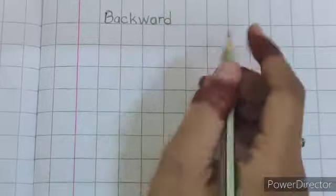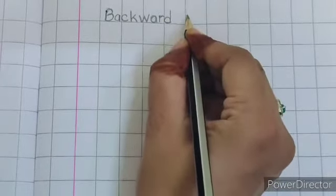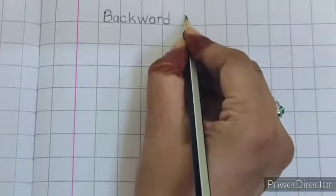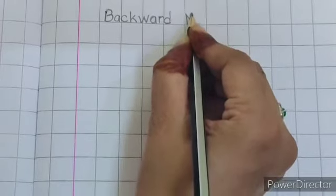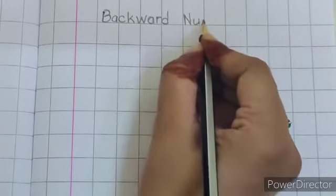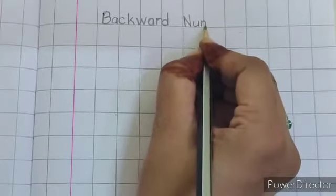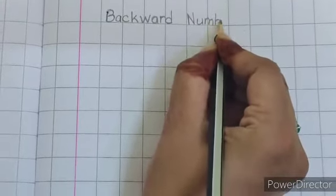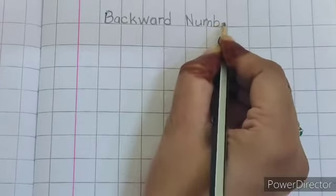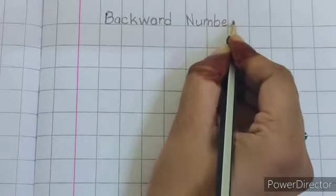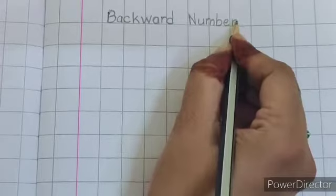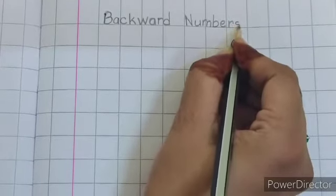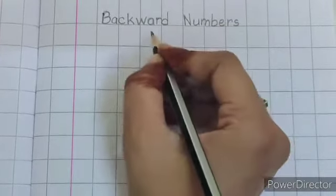now leave one finger space and write down capital N, U, M, B, E, R, S, backward numbers